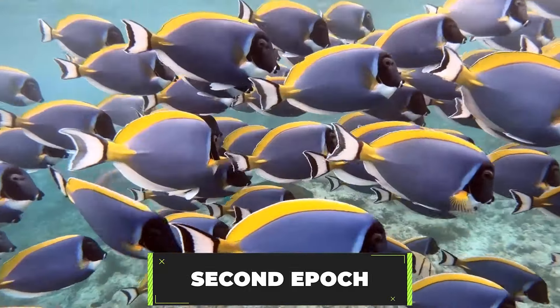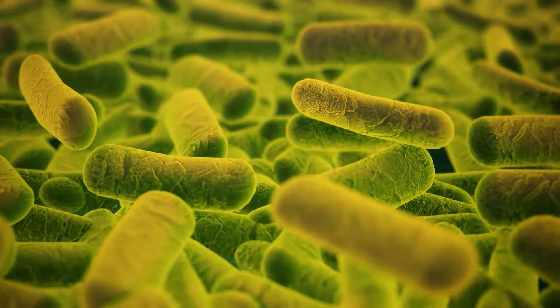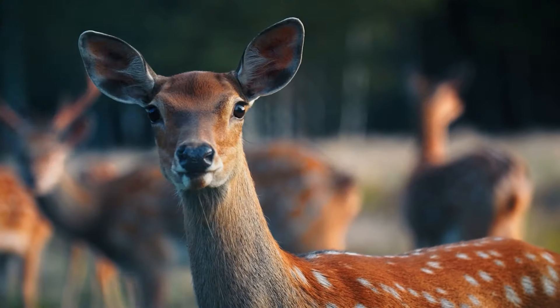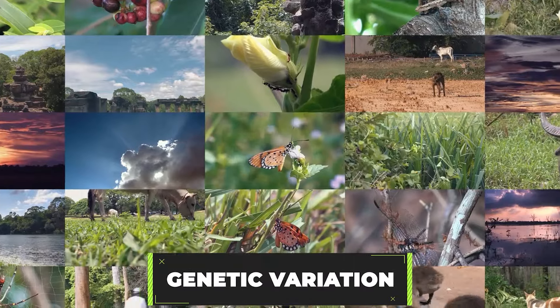The second epoch marks the emergence of biological life on Earth. This phase saw the evolution of simple organisms into more complex life forms through processes like natural selection and genetic variation.